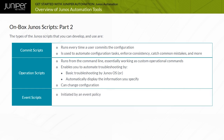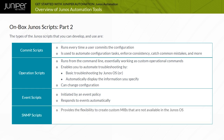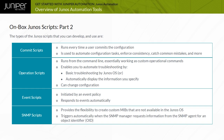Event scripts are similar to operation scripts, except that they are initiated by an event policy. This feature enables you to have the software automatically respond to events that it logs, such as interface state changes or BGP neighbor state changes. SNMP scripts provide the flexibility to create custom MIBs that are not available in the Junos OS. They are triggered automatically when the SNMP manager requests information from the SNMP agent for an object identifier or OID that is mapped to an SNMP script for a non-Junos OID.